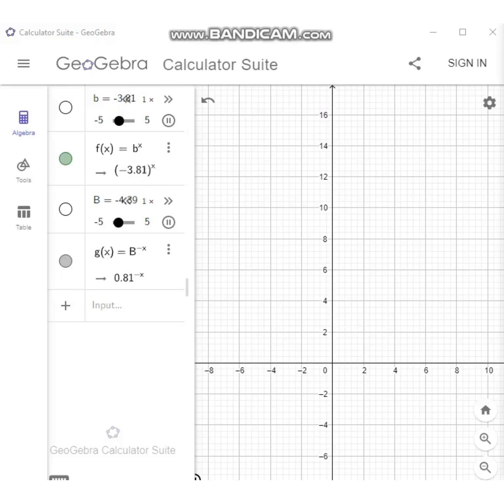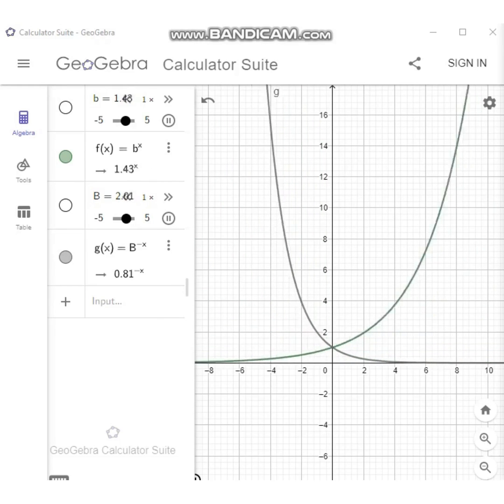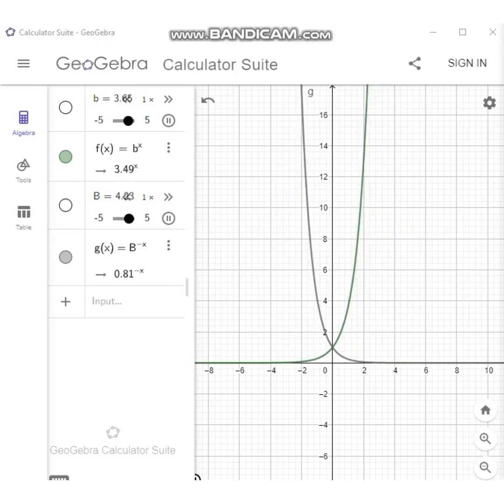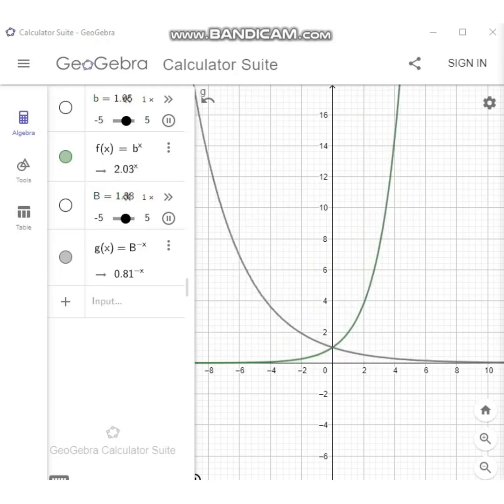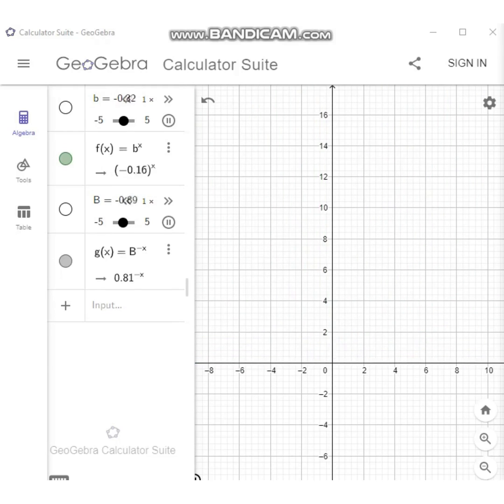With the definition f(x) = b^x and the restrictions that b is greater than 0 and b is not equal to 1, the domain of an exponential function is the set of all real numbers and the range is the set of all positive real numbers.